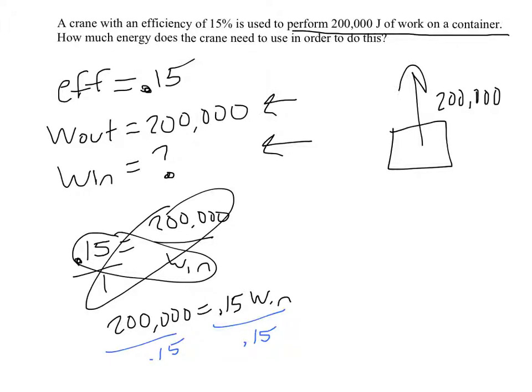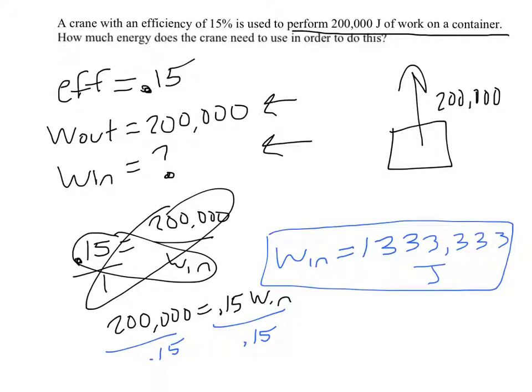If we do that, that should get us our answer. The work in is 1,333,333 joules. But again, here's where we have to just make sure this makes sense. We want 200,000 out, and we have to invest almost over a million. Does that make sense? Well, let's see.